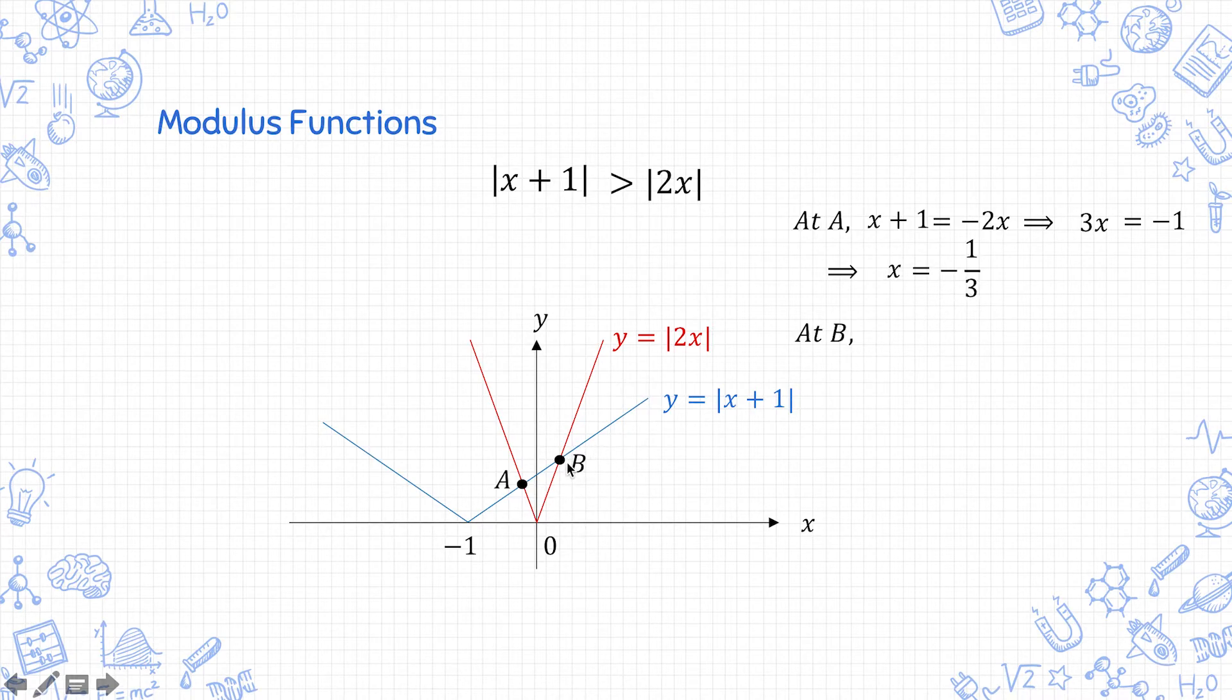Then at b, b also lies on the part of the blue graph where y equals x plus 1. So we have x plus 1 and it lies on the part of the red graph where y equals 2x which you notice is different from just now which was negative 2x. So at b, x plus 1 equals 2x and then you can solve this to x equals 1.